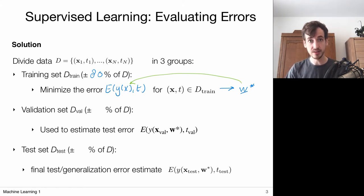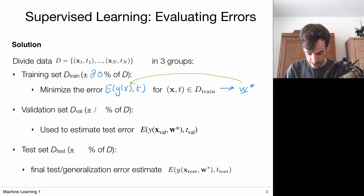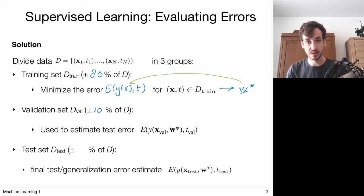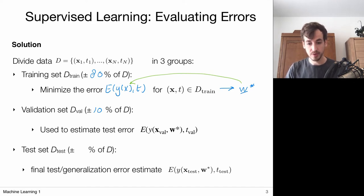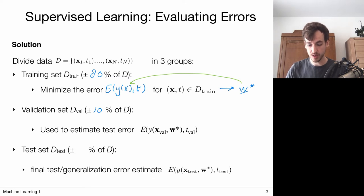We're going to validate these trained models on a separate validation set, consisting of 10% of the data samples. It's important that these samples are not included in the training set, so the model hasn't seen these data points before, allowing us to estimate the error and get an impression of how well it generalizes. We mainly use this validation set to tune our hyperparameters — training a model for every lambda or hyperparameter value and then selecting the most optimal one.